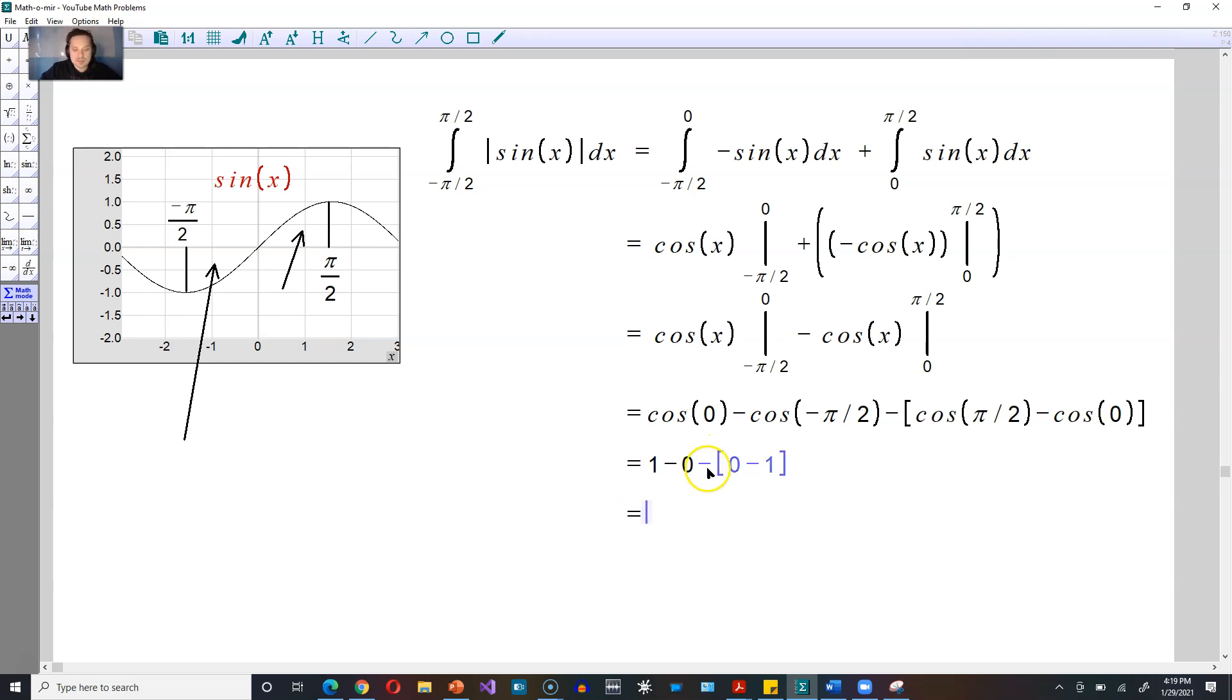Drop all of the zeros. Be careful here because outside the brackets is a negative 1. So you're going to end up with 1 plus 1 which gives you 2, and that's the answer.